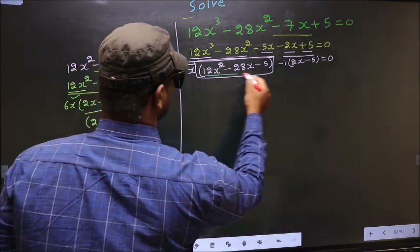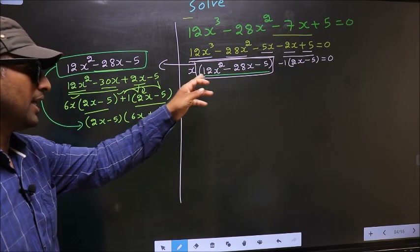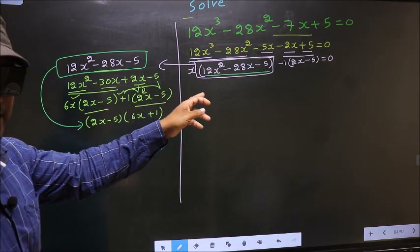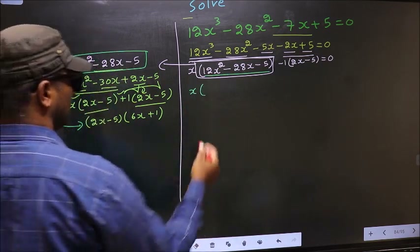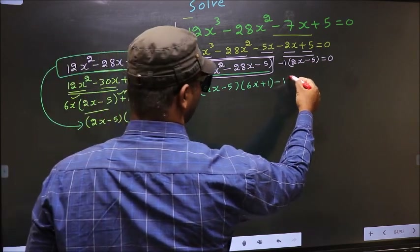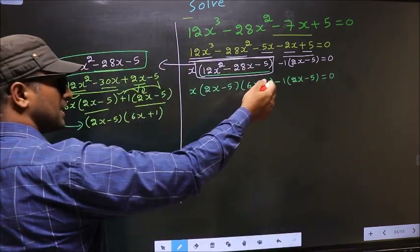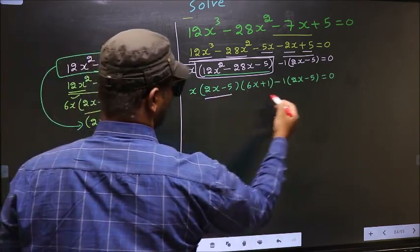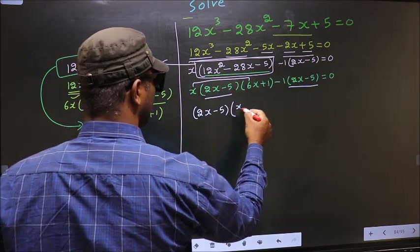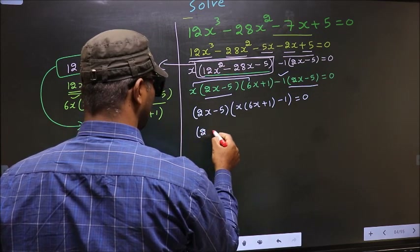In place of this quadratic we write (2x - 5)(6x + 1). So the equation changes to x(2x - 5)(6x + 1) - 1(2x - 5) = 0. From this entire equation, what can be taken out common is (2x - 5). So (2x - 5) outside; we are left with x(6x + 1) - 1 = 0.